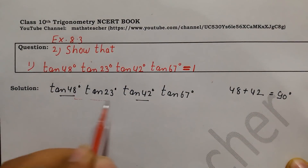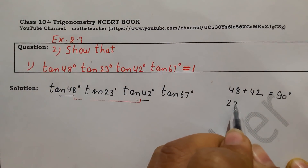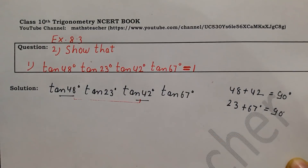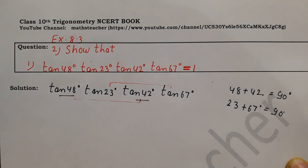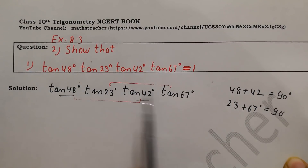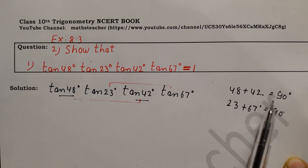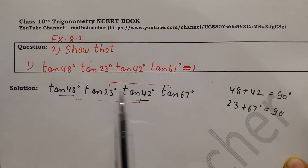This means 48° and 42° are complementary angles. And second: 23 plus 67 — how much is this sum? 90°. This means 23° and 67° are also complementary angles. So we have seen the pairing: 48 & 42 are complementary, and 23 & 67 are complementary.